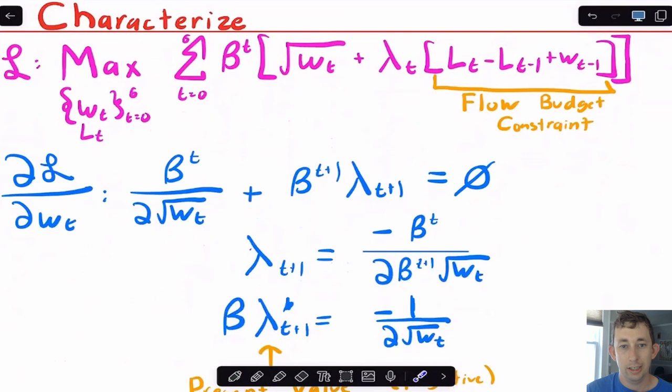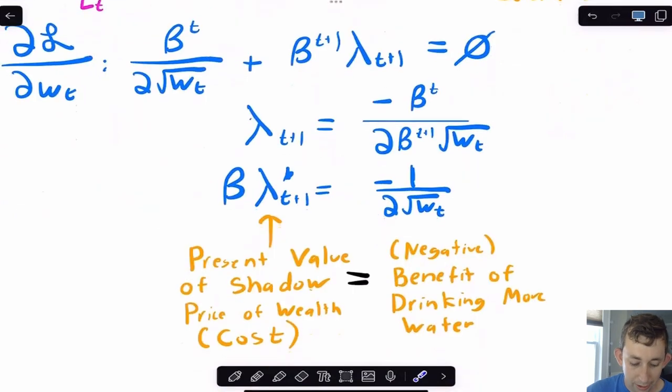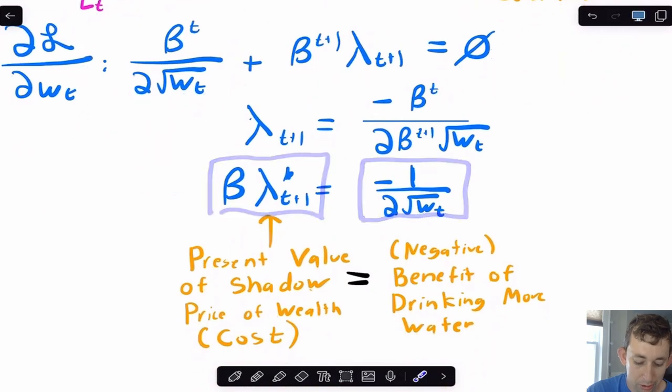We know by now that the way we're going to characterize solutions is to take the first order conditions and interpret them. First, let's take the first order condition with respect to WT. What I'm going to do is have beta to the T times the derivative of this guy, which is one half WT to the negative one half, or one over two times the square root of WT. Notice that if I want to get this WT minus one in the next period, in period T plus one, I'm going to have LT plus one minus LT plus WT. And so the Lagrangian for tomorrow is going to be equal to zero.